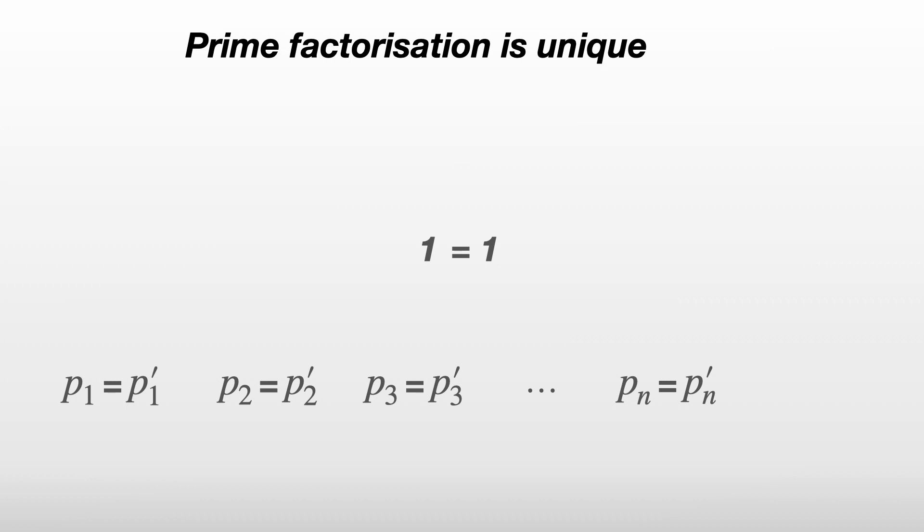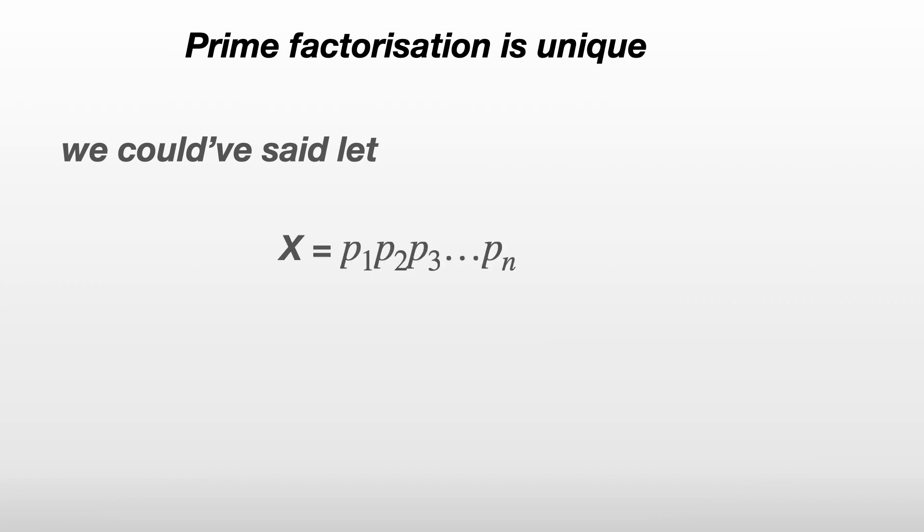Okay, but some of you might have noticed, I just assumed the two different prime factorizations of x had the same number of primes. We could have said, let x be the product of p1 to pn. And also, let x be the product of p1' to pm', where in this case, m is greater than n.